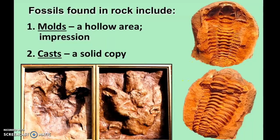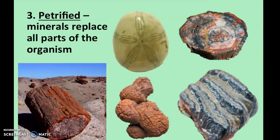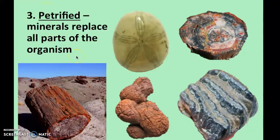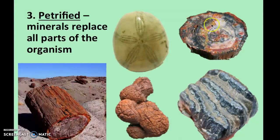Petrification, sometimes called permineralization, is the next type. The stem 'petra' refers to stone — minerals replace all parts of the organism. Depending on the type of mineral absorbed into the cells, the fossil can be different colors. Some petrified ammonites or dinosaur bones contain calcite crystals or barite crystals. I have an ammonite fossil that appears gold because it contains pyrite crystals. Often it's silica-based material with a shiny look, like this petrified wood from Arizona.